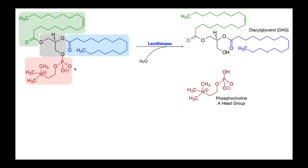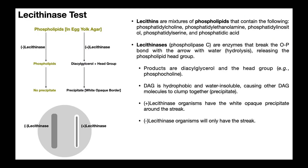Really this whole thing is the head group. When the lecithinase hydrolyzes this bond, it splits it into phosphocholine — generally a head group — and diacylglycerol or DAG. The reason this is called diacylglycerol is because 'acyl' refers to the fatty acid tail, there are two of them ('di'), and then it has a glycerol — diacylglycerol or DAG.